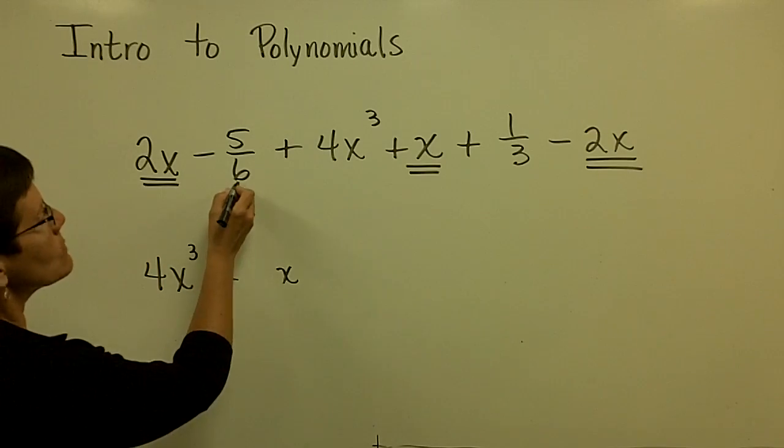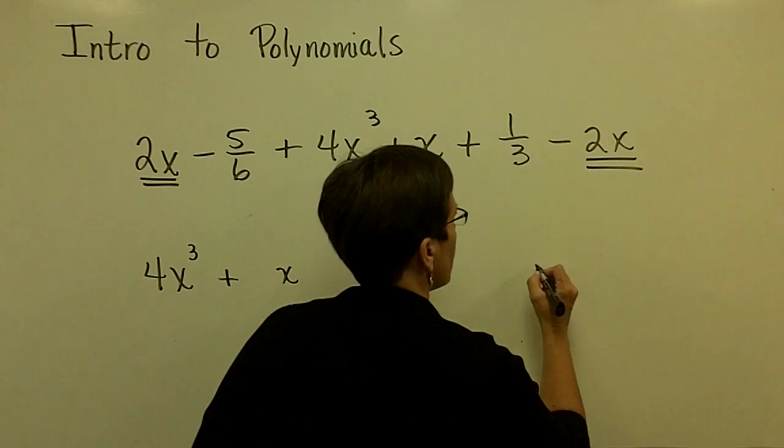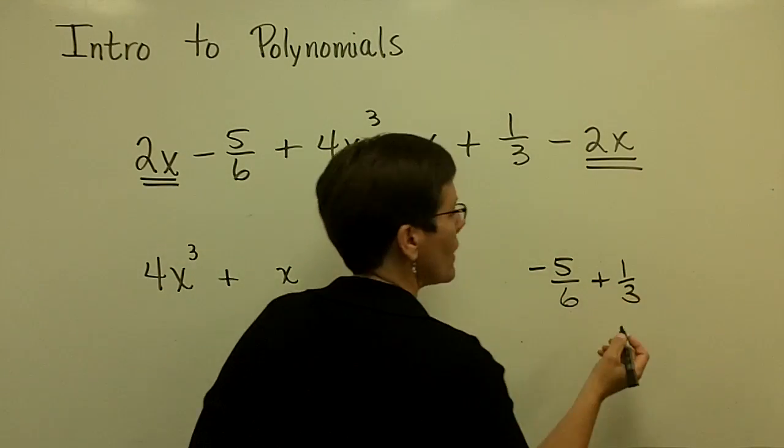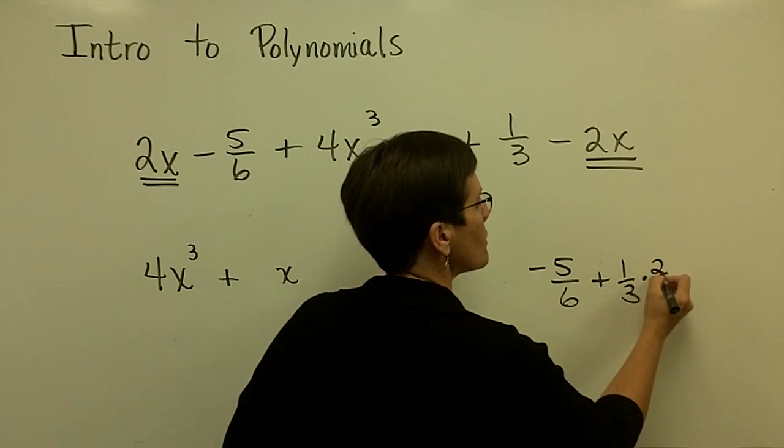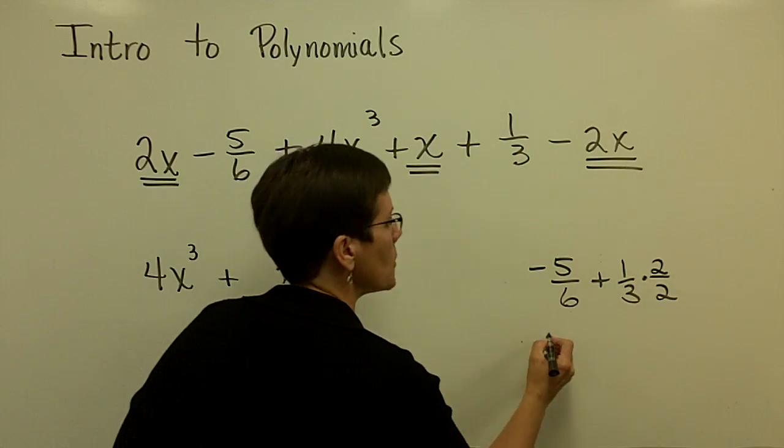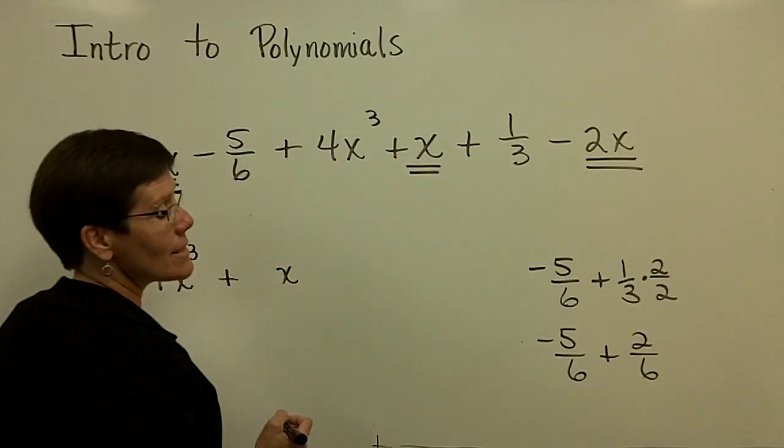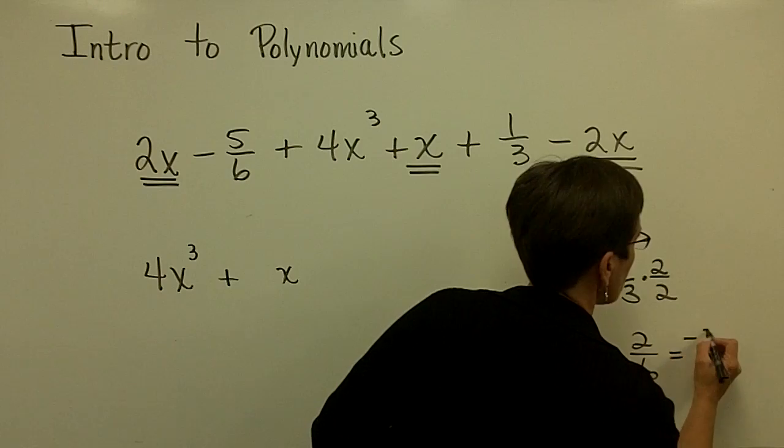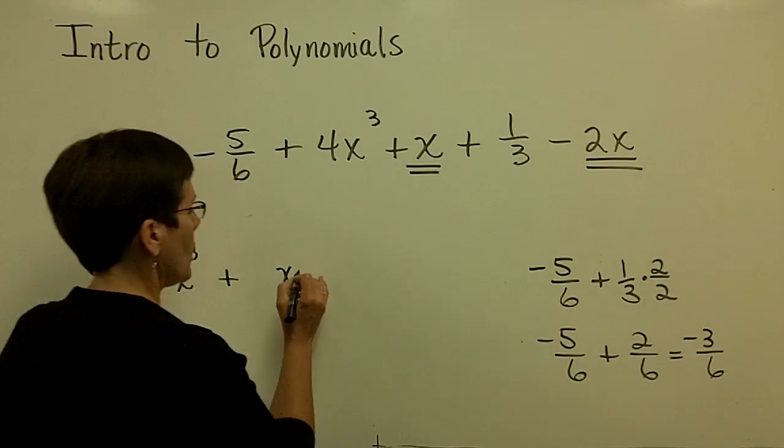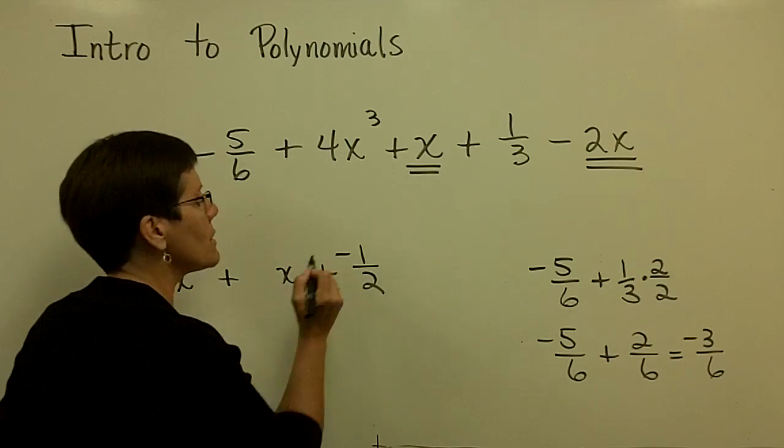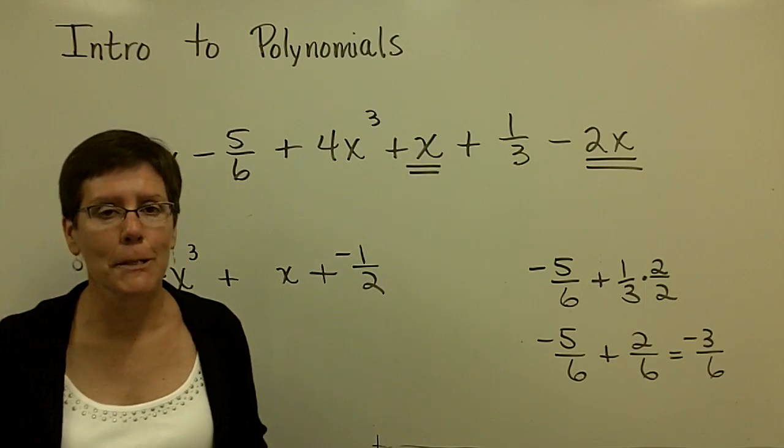And then I've got to take this -5/6 and add the 1/3 to it. So I need a common denominator of 6. So I'm going to multiply that fraction by 2/2. So I have -5/6 + 2/6, which adds to be -3/6, which is -1/2. You can write that as minus 1/2 or plus a negative 1/2. It doesn't matter.